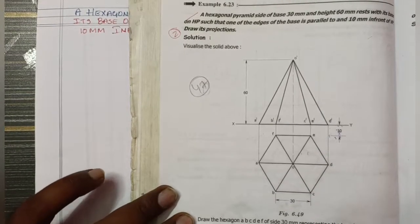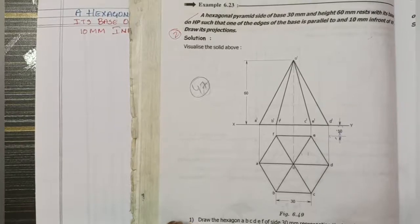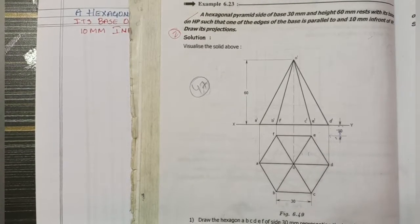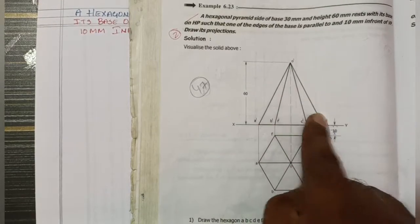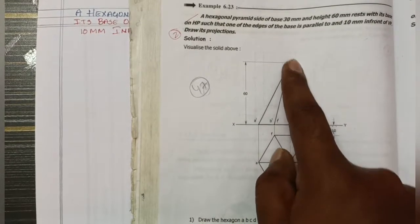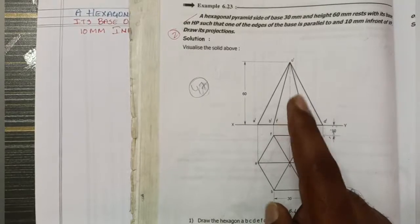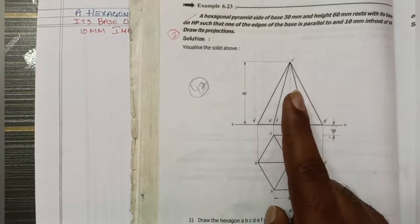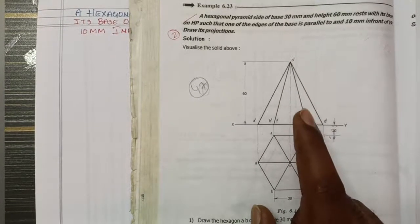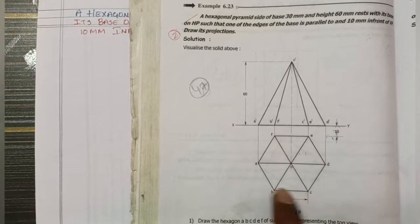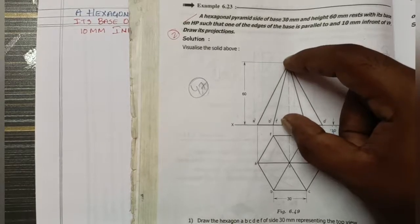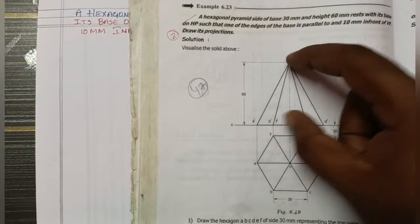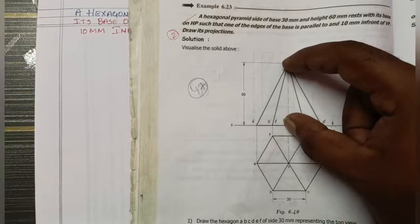Hi everybody. The next problem is a hexagonal pyramid. Pyramid is an easy problem. Let's draw the axis. Side of base is 30 mm and height is 60 mm. This side is 30 mm, height is 60 mm, and this axis is 60 mm.